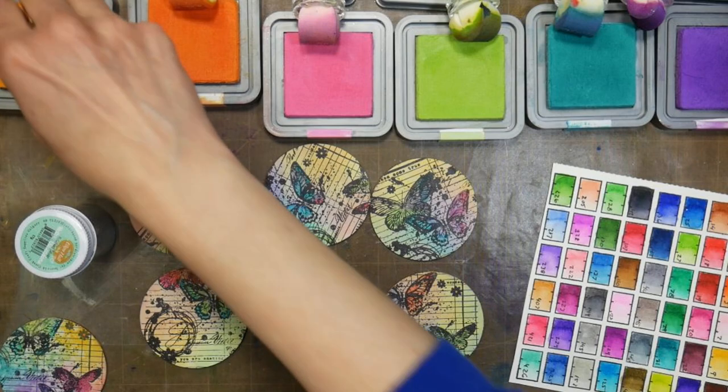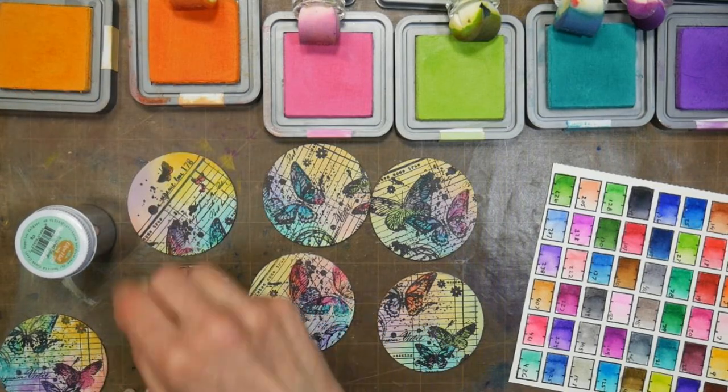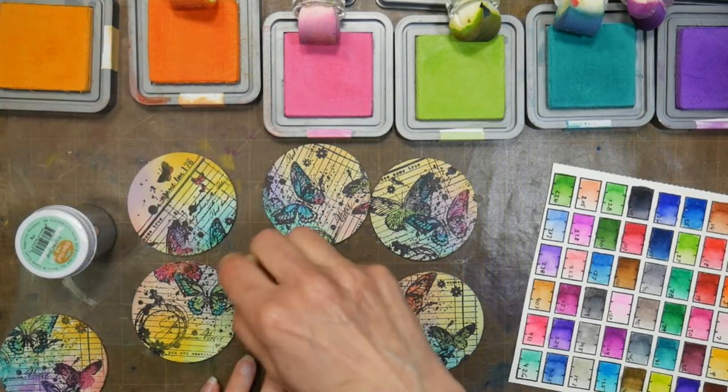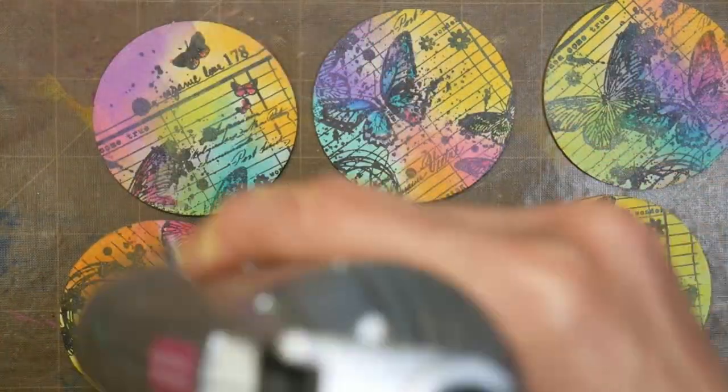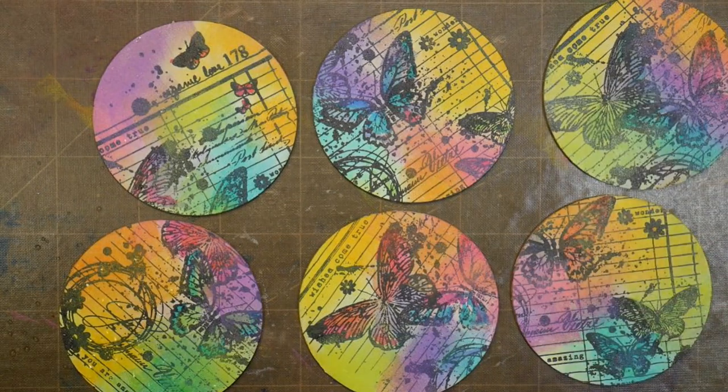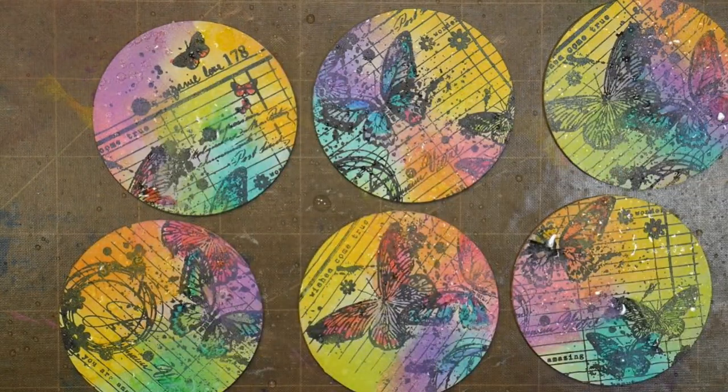I went in and colored all of my little butterflies and now I'm using some homemade sponge daubers to add more distress ink right from the pads. After that I dried each of the coins to make sure that ink was set and now I'm giving it a spritz of water.